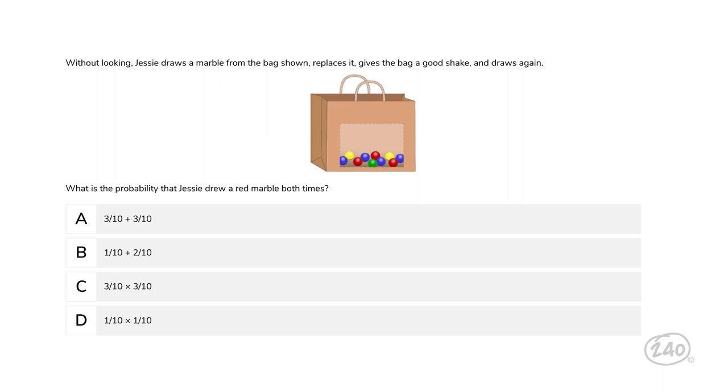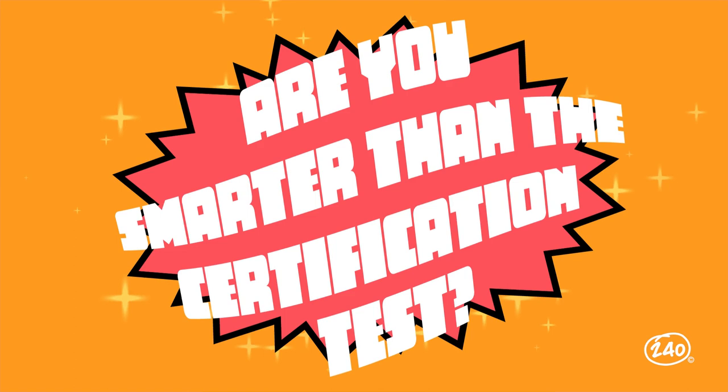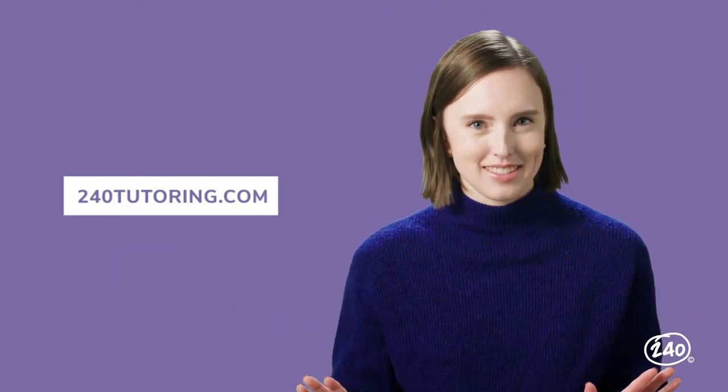On the first draw, the probability of drawing a red marble is 3 out of 10. Since the marble is replaced, the probability of drawing a red marble on the second draw is still 3 out of 10. So the probability of drawing red on both draws is 3 over 10 times 3 over 10. Ladies, gentlemen, and everyone in between, I hope you've enjoyed practicing for the Texas EC through 6 with me today. Click the link in the description to take the full math diagnostic test. Were you smarter than a certification test? Check out 240Tutoring.com to make sure your answer to that question is always yes.